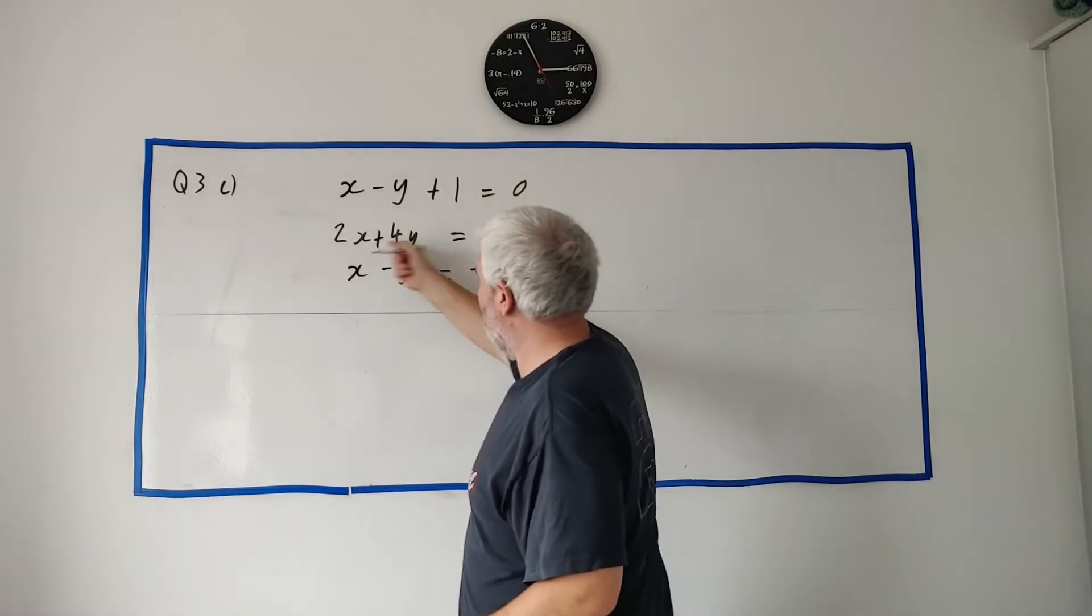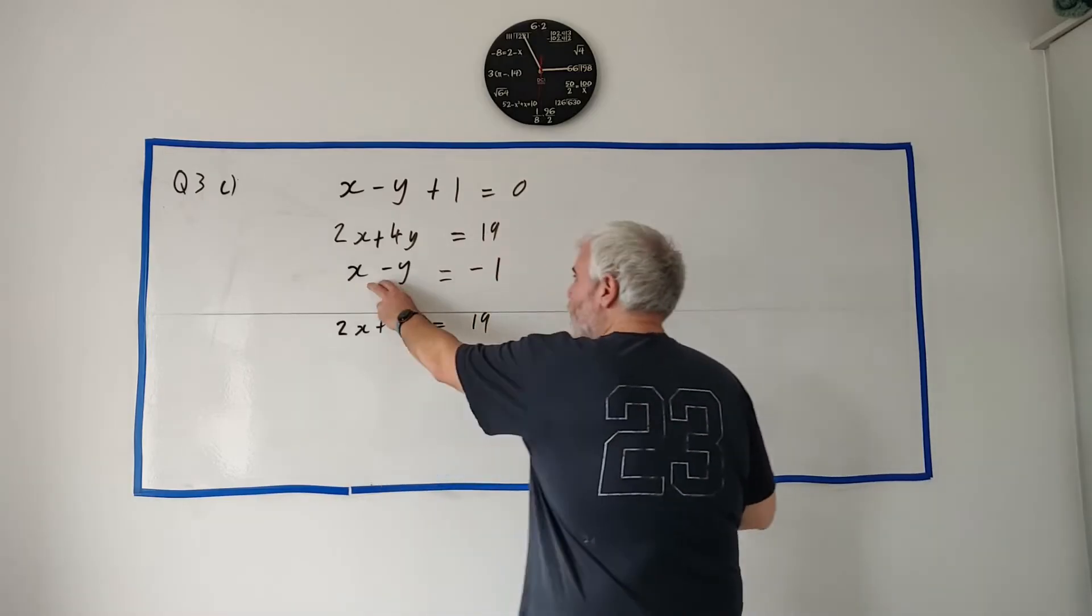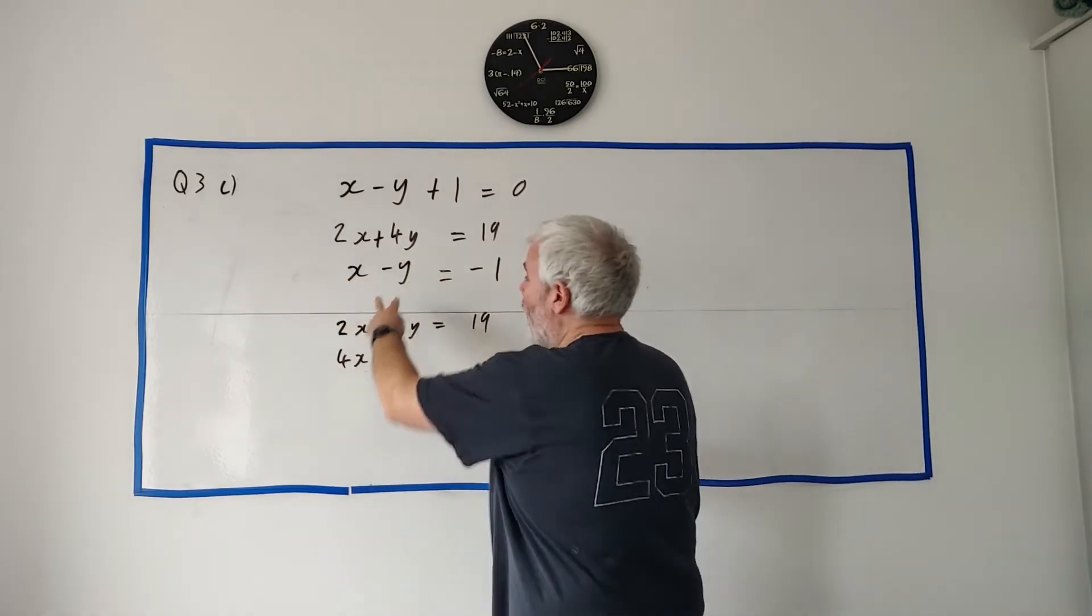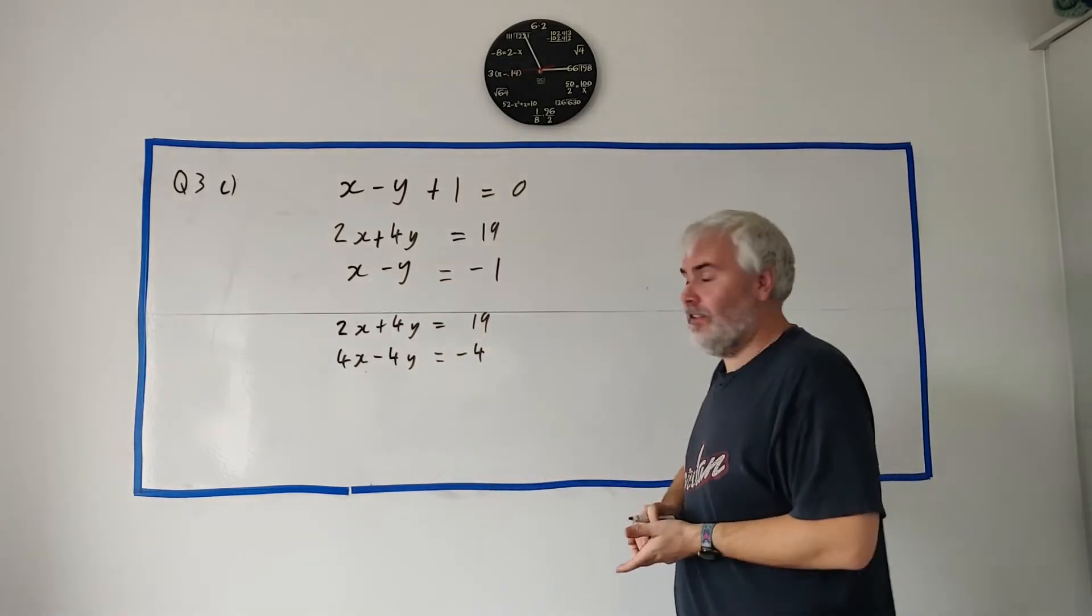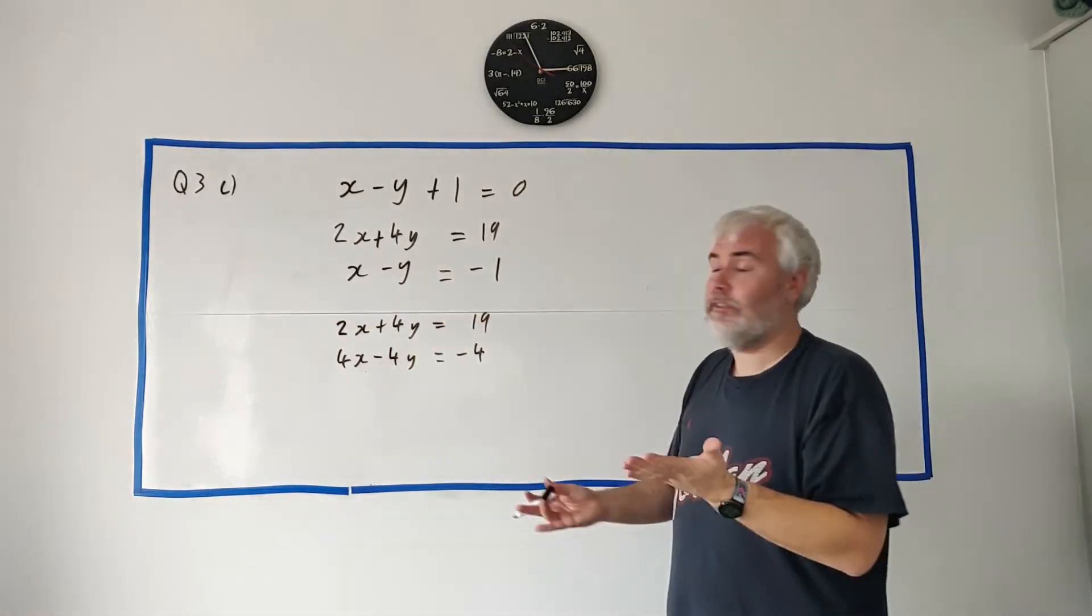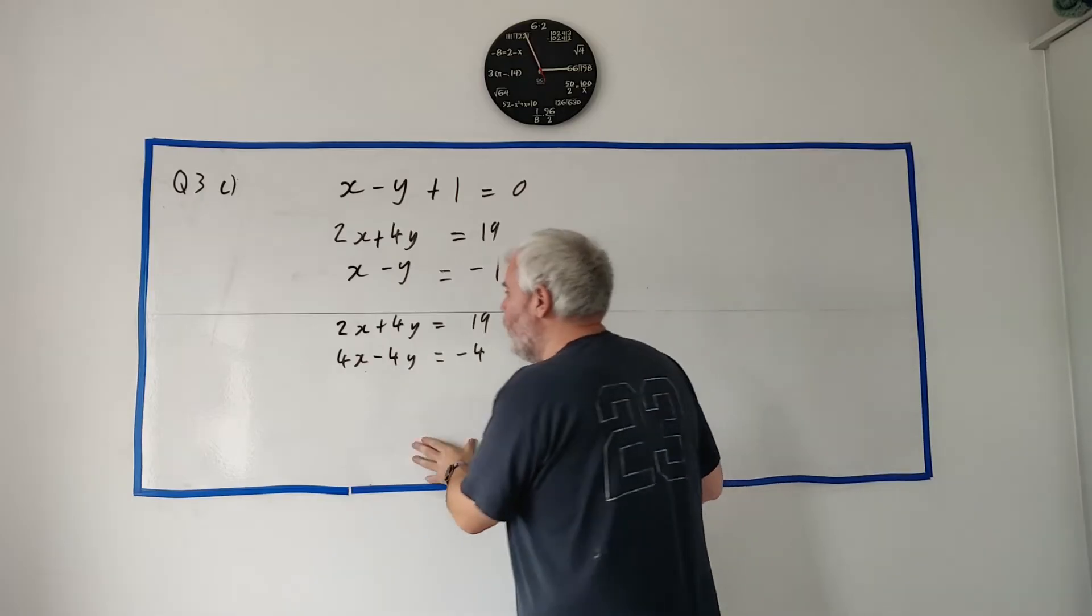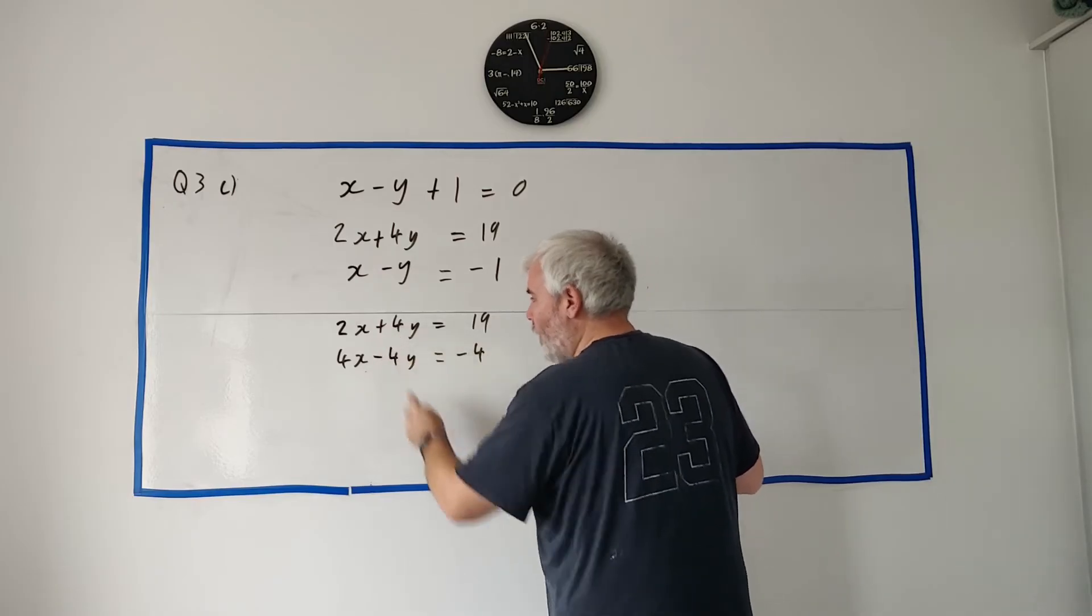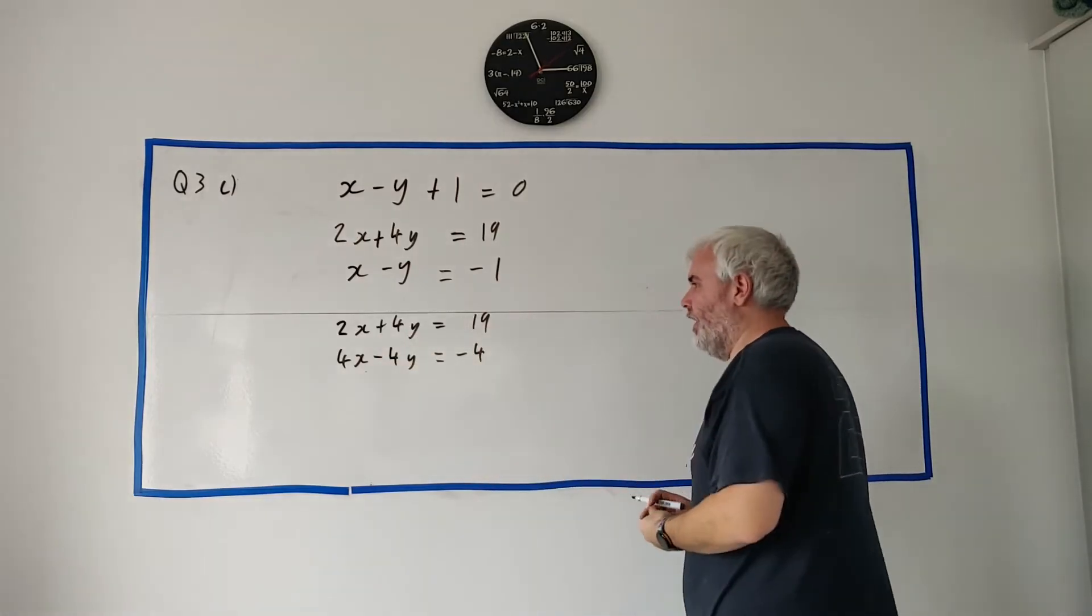The first row, I'm just going to write again, 2x plus 4y equals 19. Second row, I'm going to multiply every one by 4. So the x times 4, the minus y by 4, and the minus 1 by 4. Now the reason I'm allowed to do that is, I multiplied everything on the left by 4, everything on the right, it still equals. So I didn't really change anything, but now look, it actually matches up quite nicely. What I'm going to do is I'm going to add it together because these are actually opposite now. And I'm going to cancel the y's.